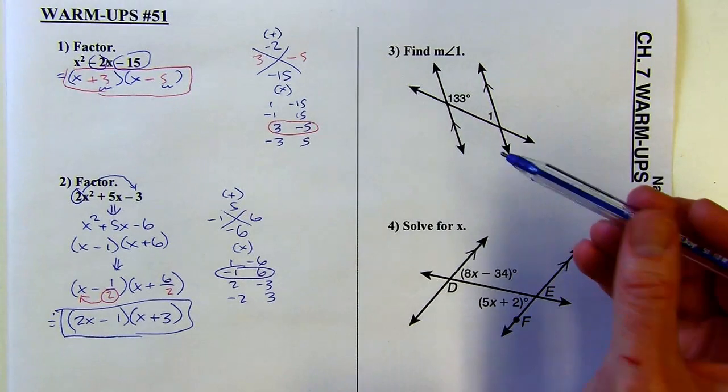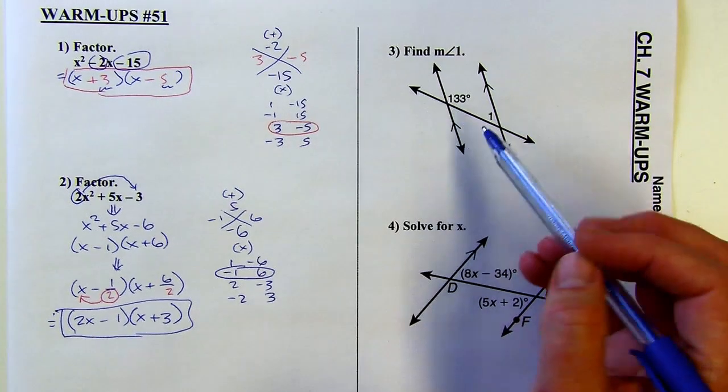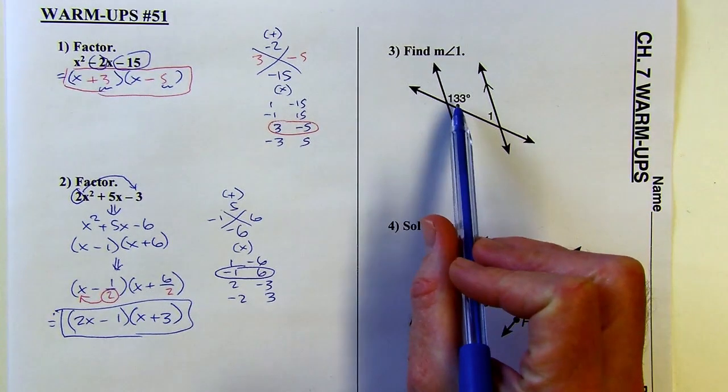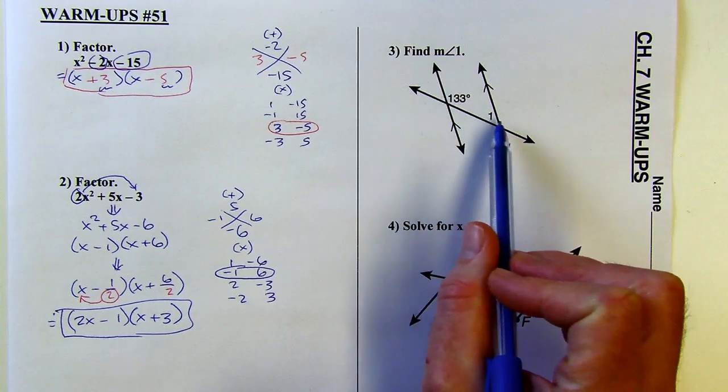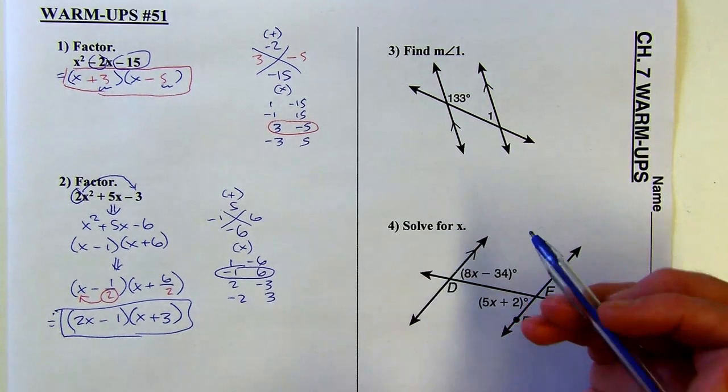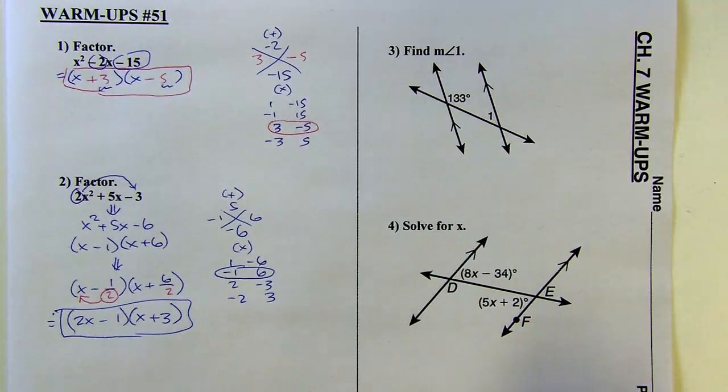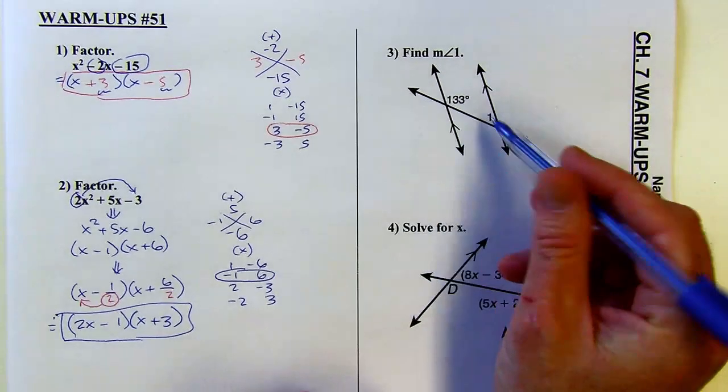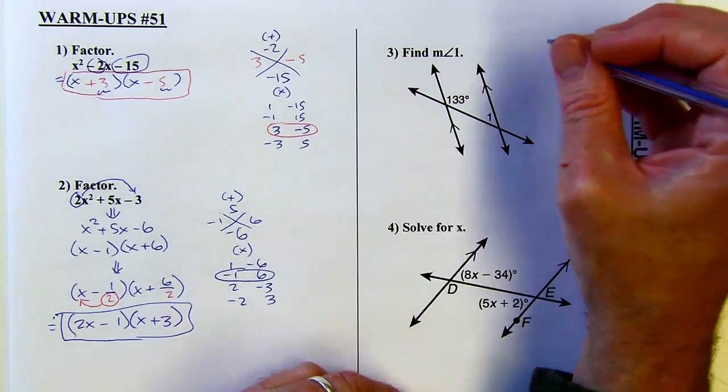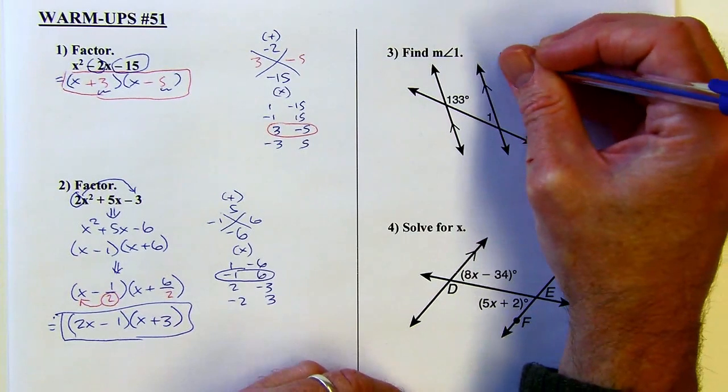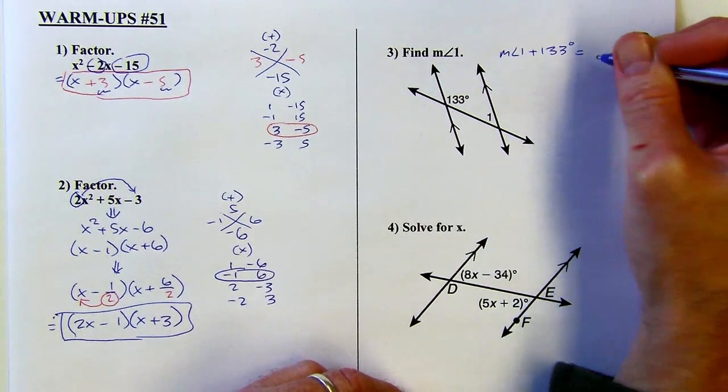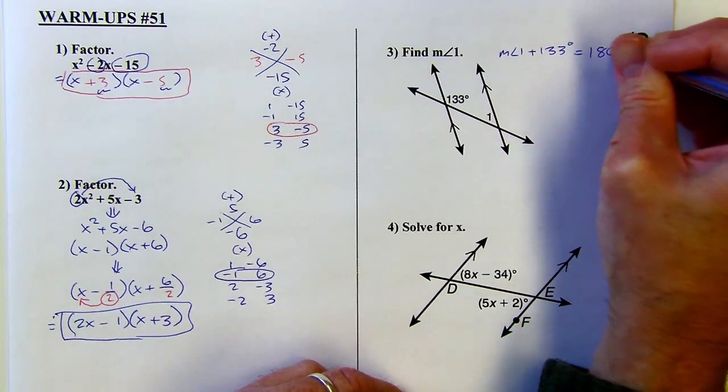Consecutive interior angles are not congruent when the tracks are parallel. And just visually, you can see, this one, it says it's 133. So it's obtuse. And this one looks acute. So if that one's acute, there's no way they'd be congruent. But they are going to be supplementary when the tracks are parallel. So I can say measure of angle one plus 133 is going to equal 180 degrees.